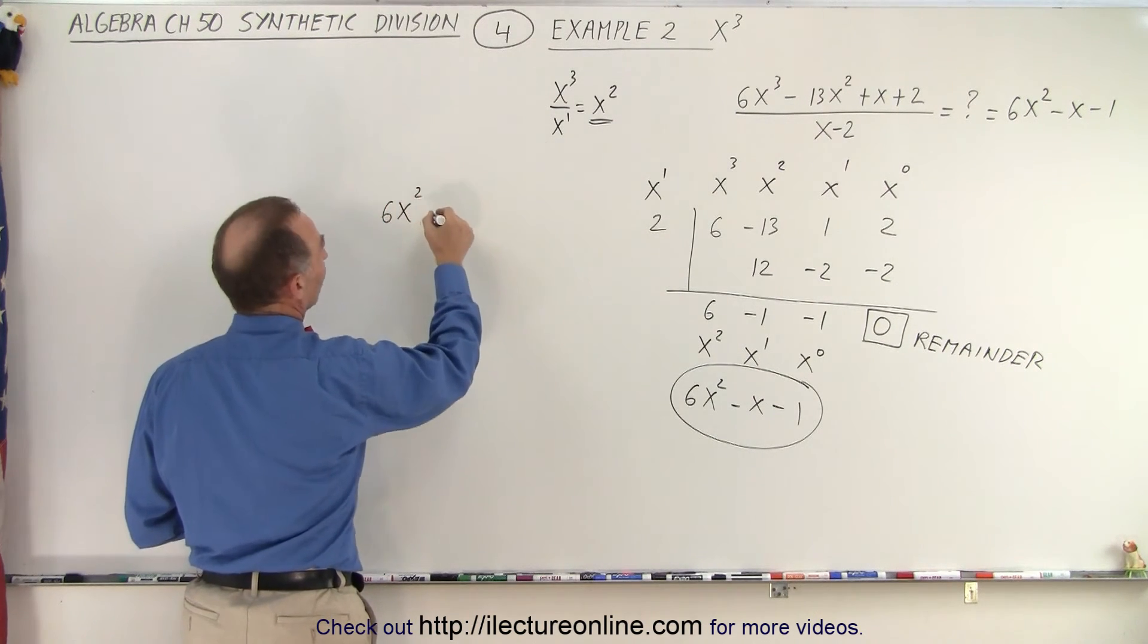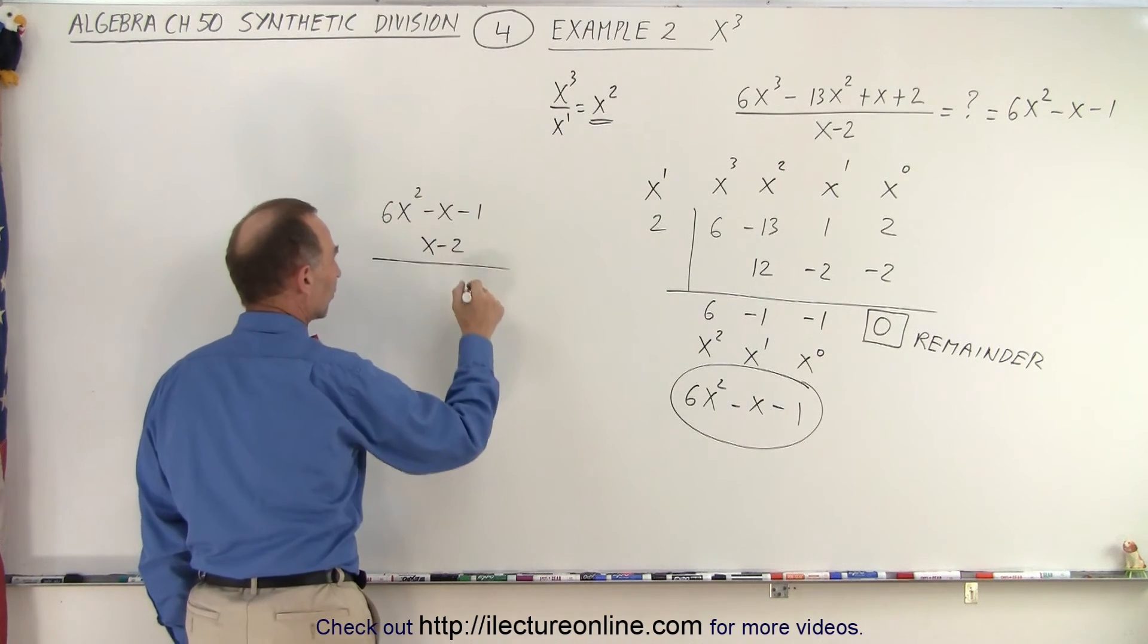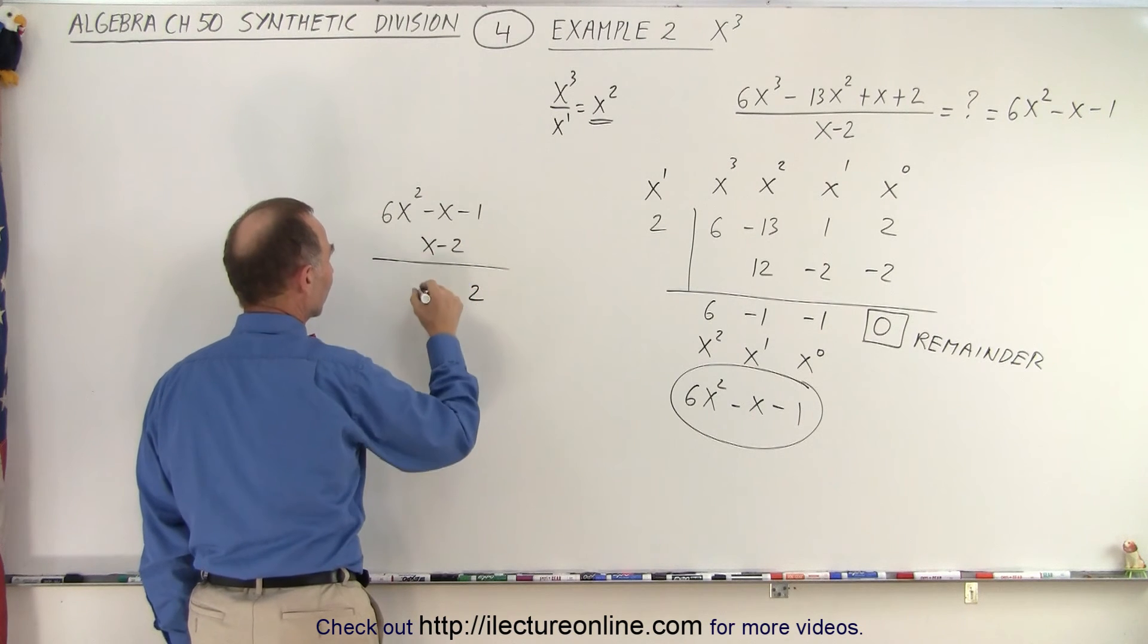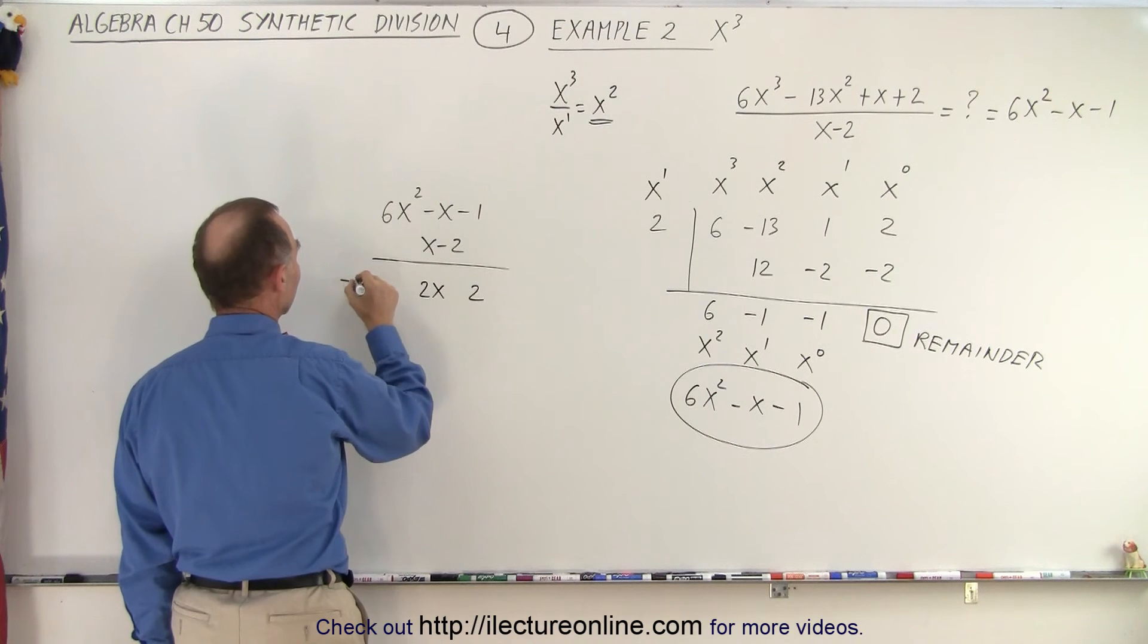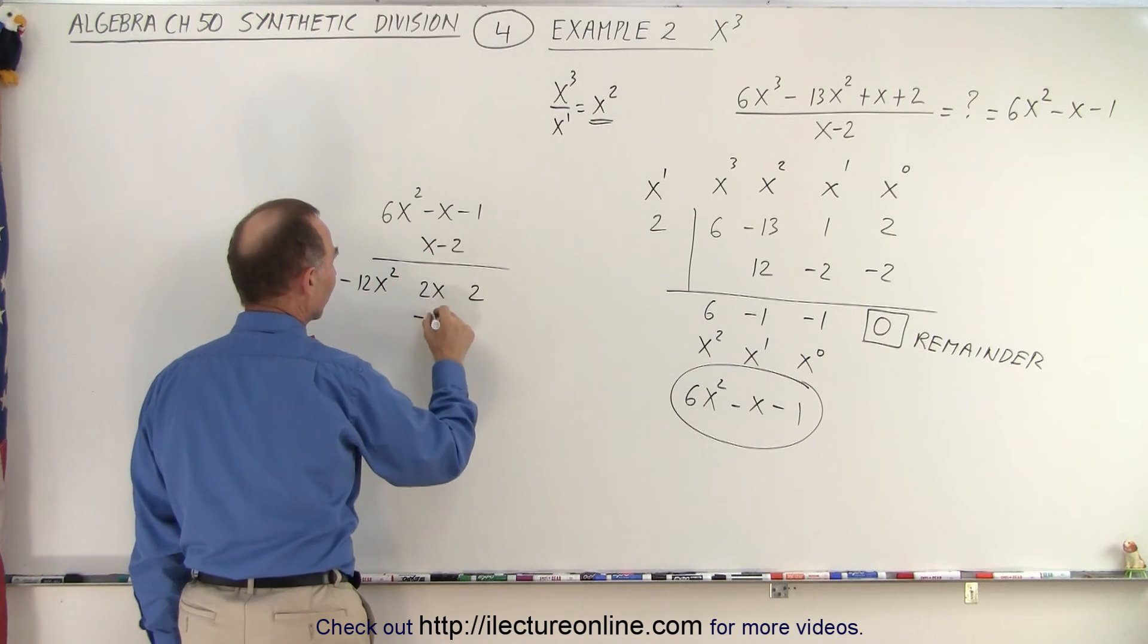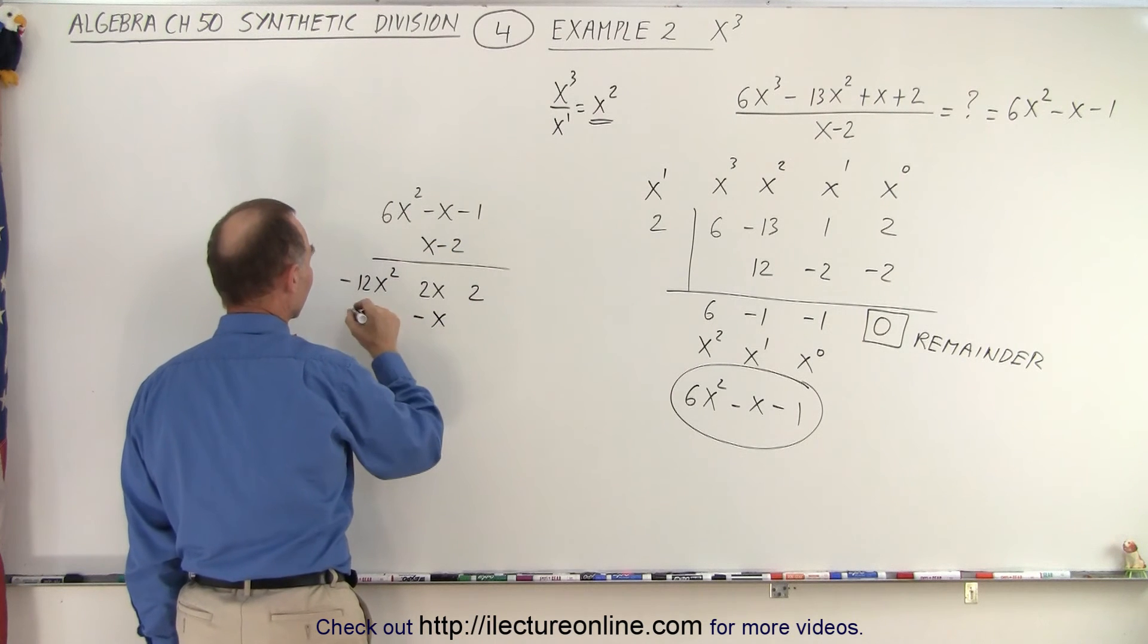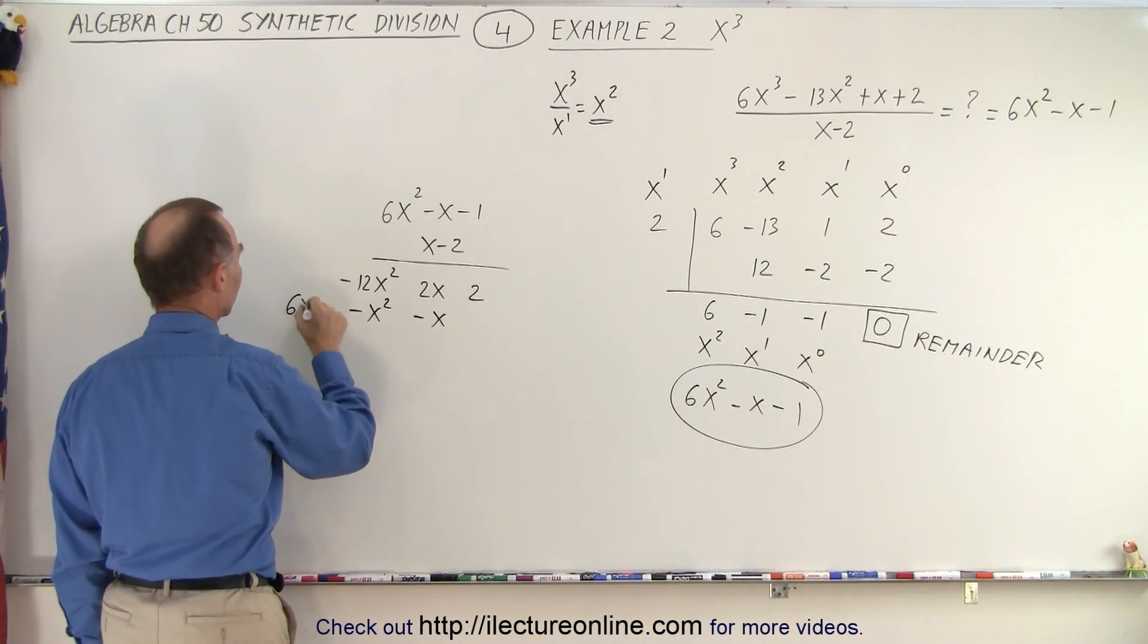6x². The way you work this out is -2 times -1 is a positive 2. -2 times -x is a positive 2x. -2 times 6x² is -12x². x times -1 is -x. x times -x is -x². And x times 6x² is 6x³.